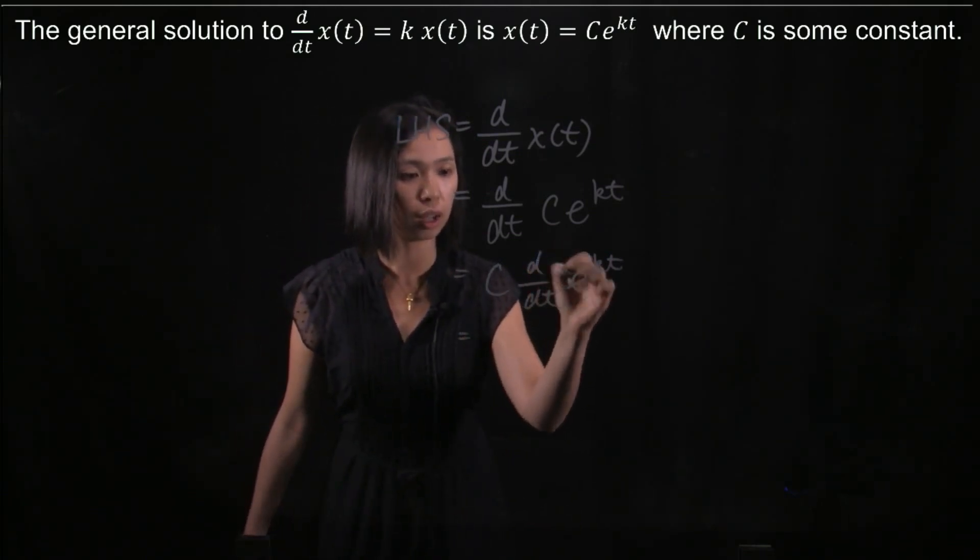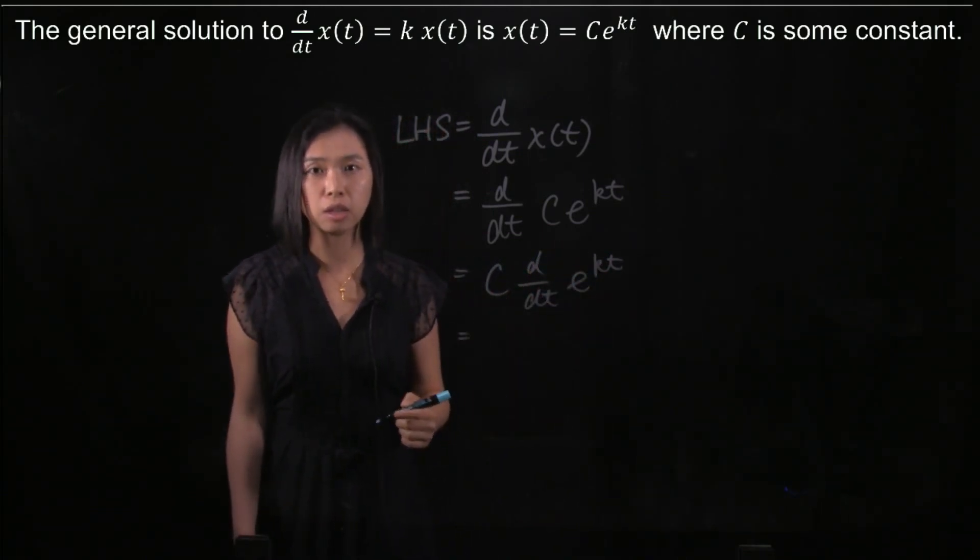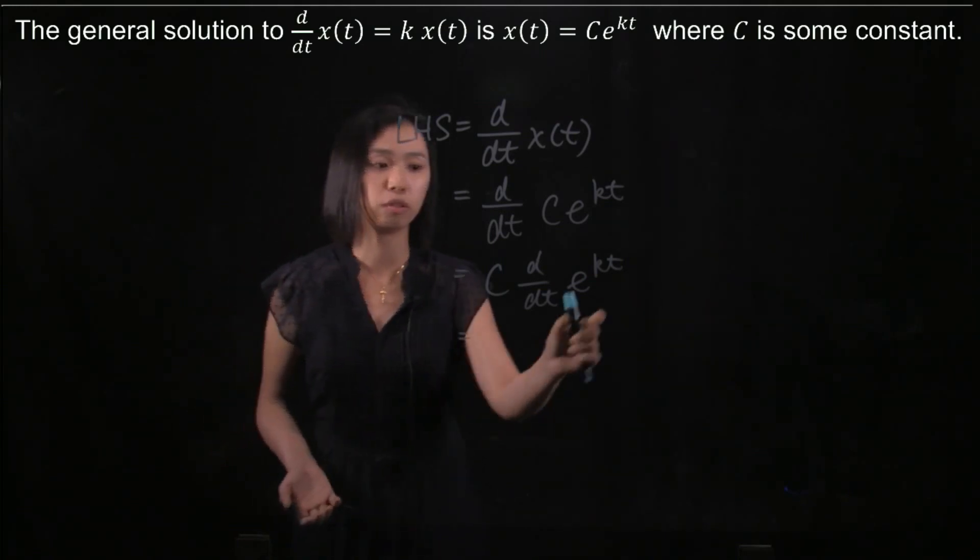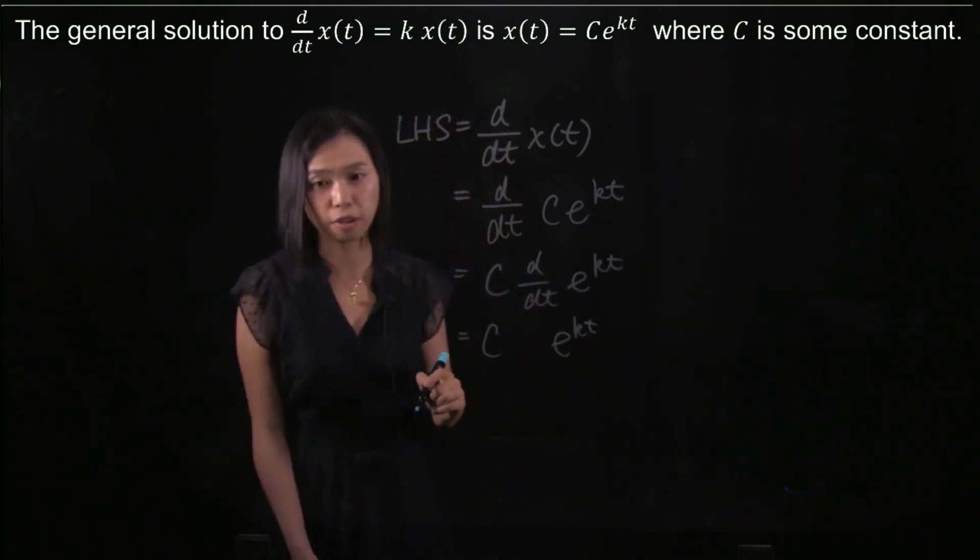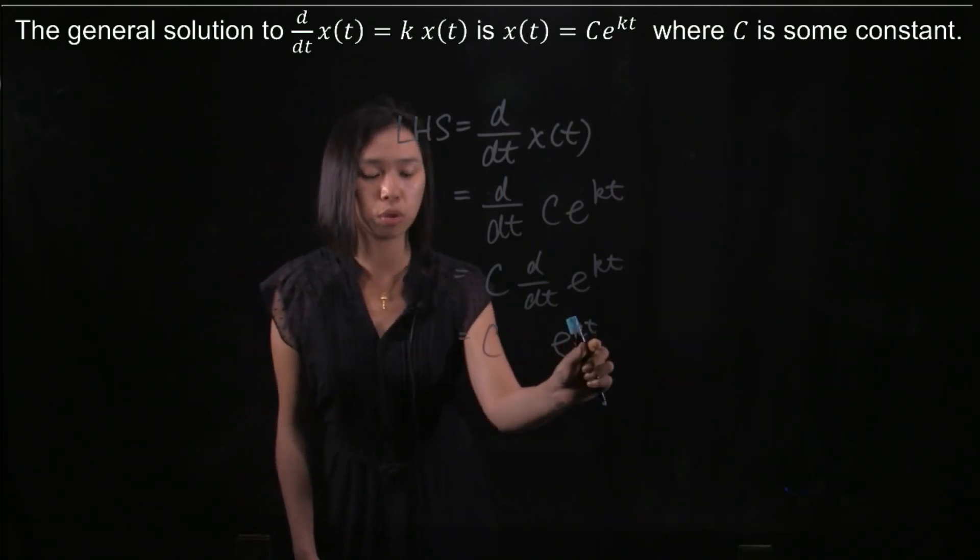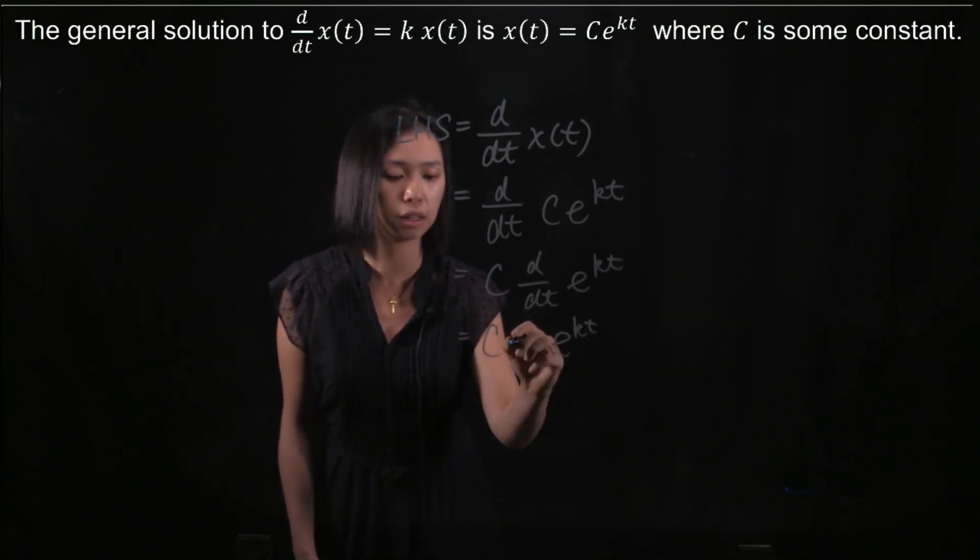Now we differentiate e^(kt). When we differentiate an exponential function, we still have the same thing. But remember the chain rule - we must differentiate kt, which gives us k.